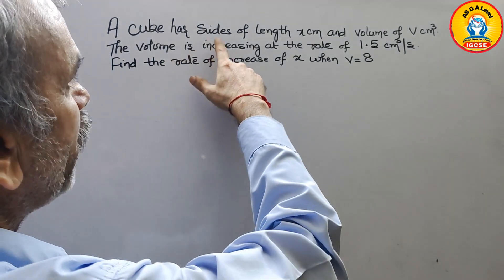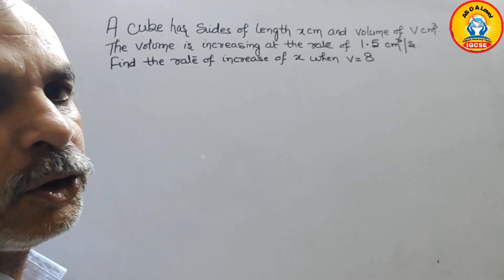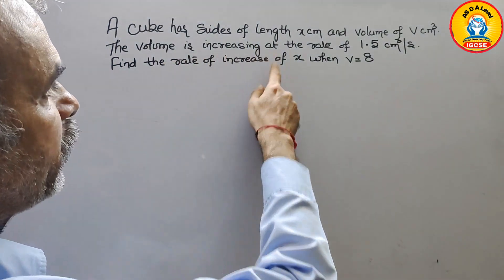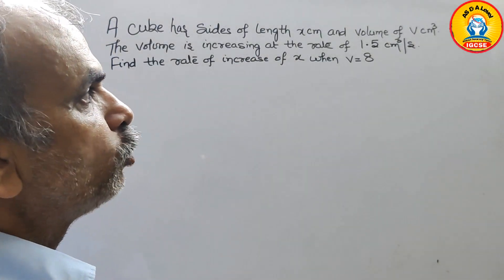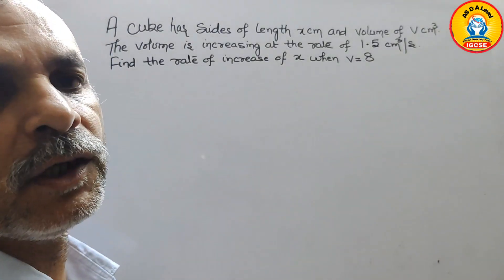Your question is: a cube has sides of length x centimeter and volume of v centimeter cube. The volume is increased at the rate of 1.5 centimeter cube per second. Find the rate of increase of x when v is equal to 8.